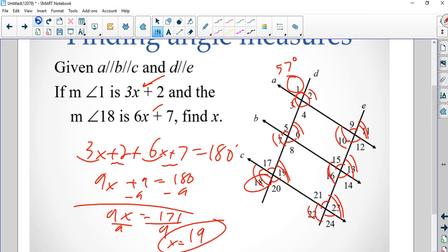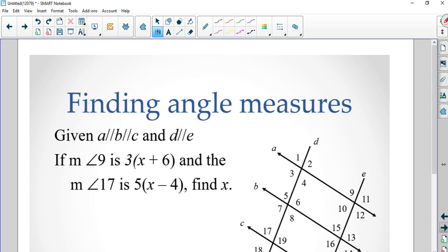Which is wrong. That's why we check our work. Forgot to add 2 to this. 3 times 19 is 57 plus 2 is 59. Now 121 makes sense. So all the obtuse angles are 121, the acute angles are 59. We're not asked to do that, but it's good to be able to do it.